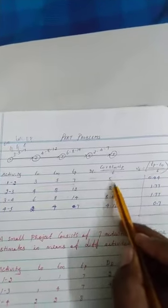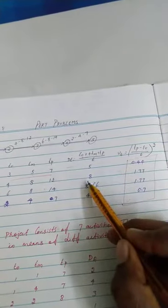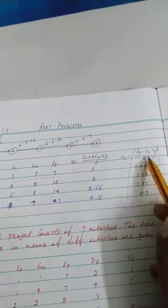T0 plus 4TM plus TP by 6: 5, 8, 8.66, and 4.16. The variance we have in the formula. Substitute in the above, below the values in this particular formula, you will get this variance answer.